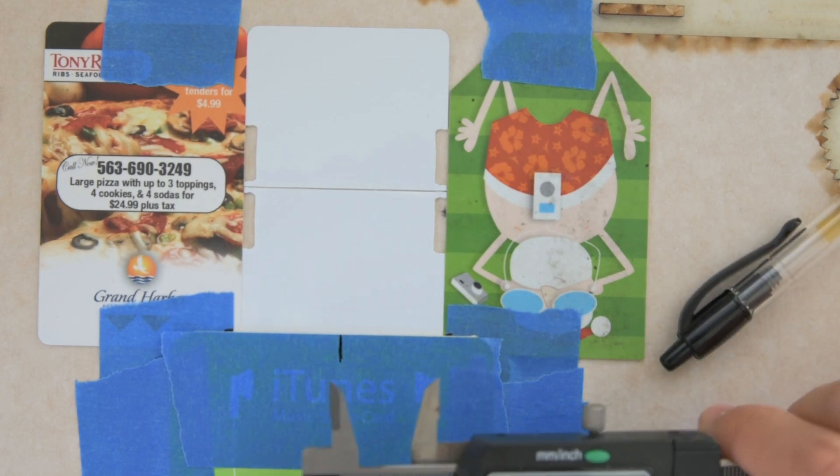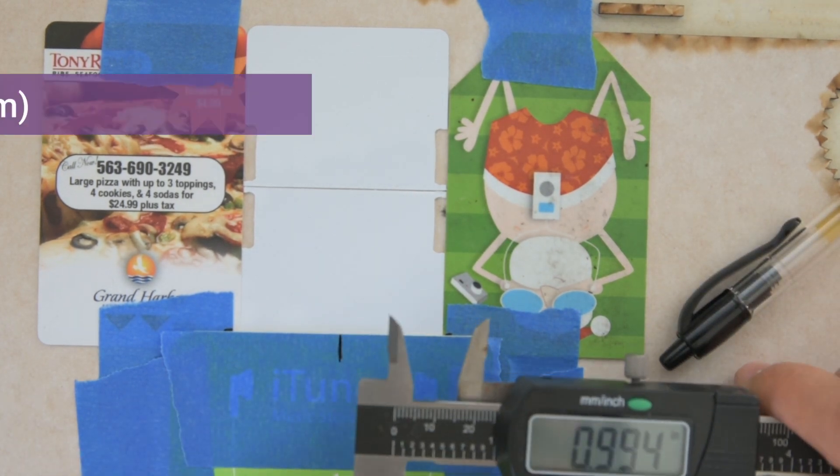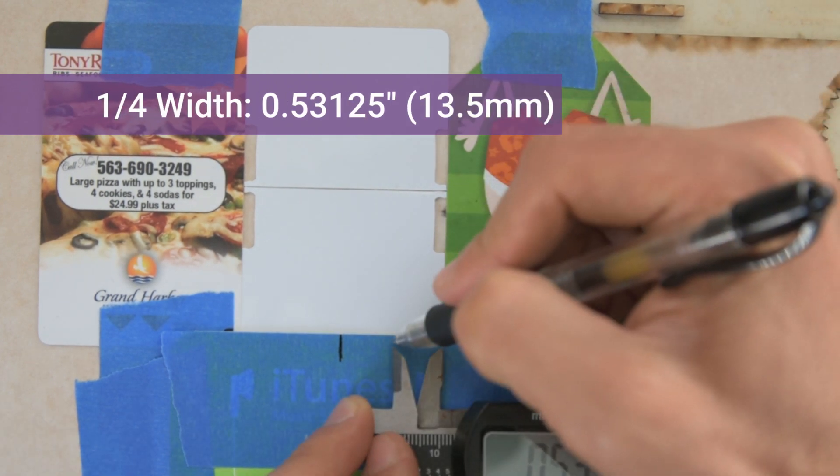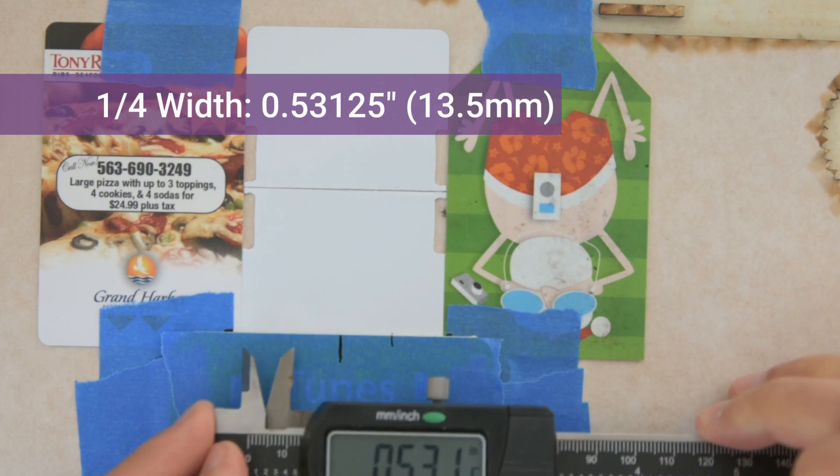And so then we divide that in half again. And so it's 0.53125 inches. And let's just make one of these marks on each side.